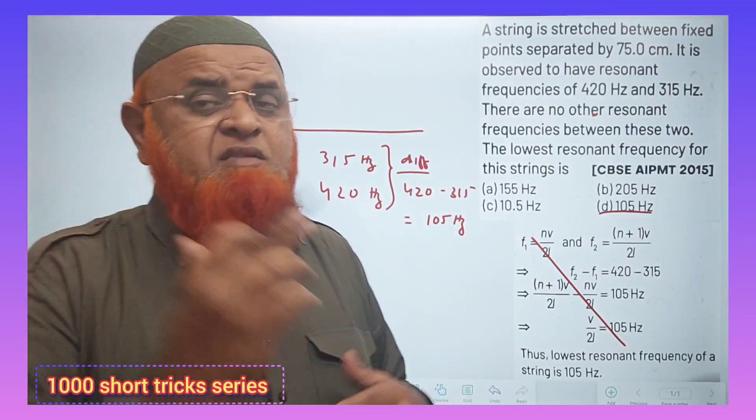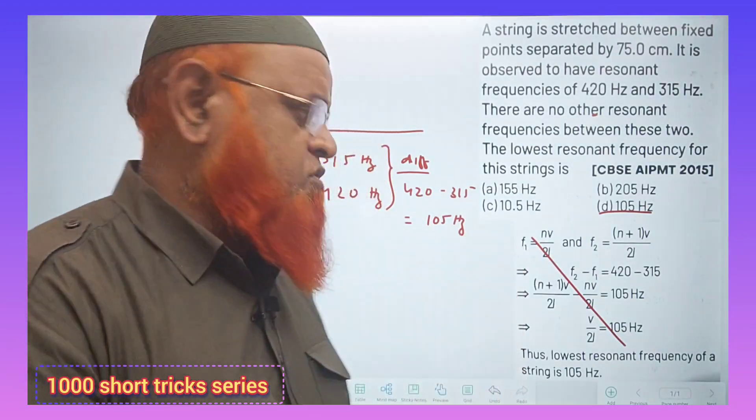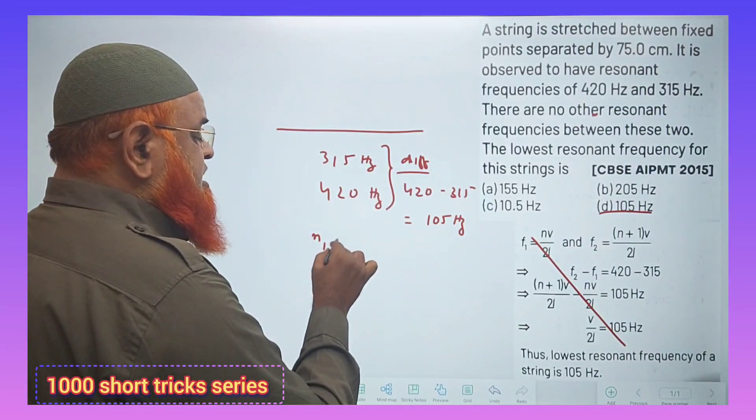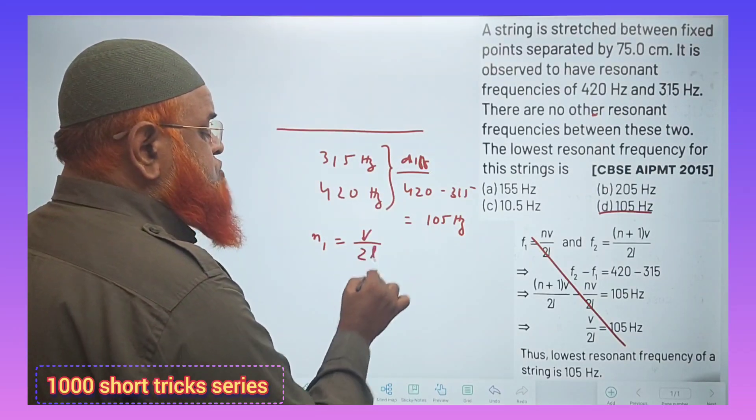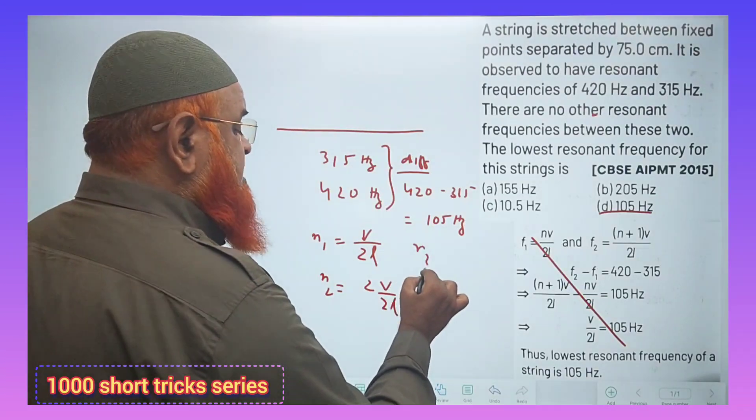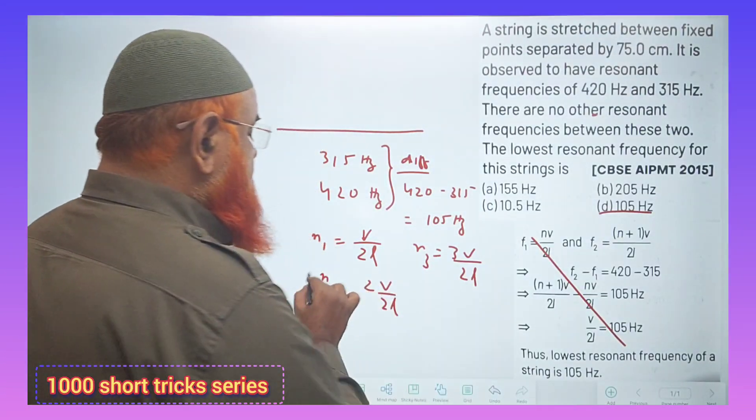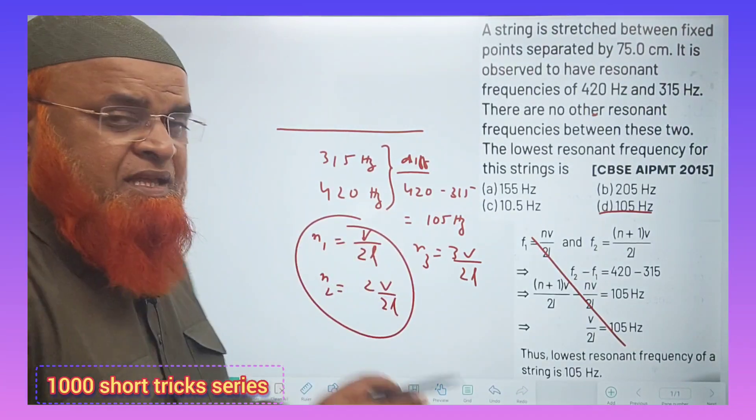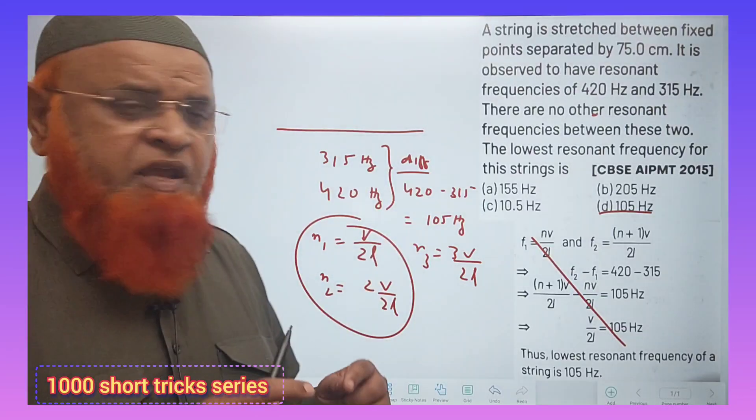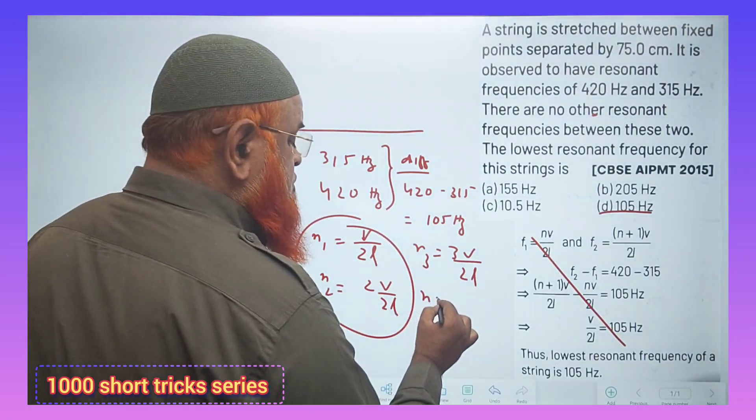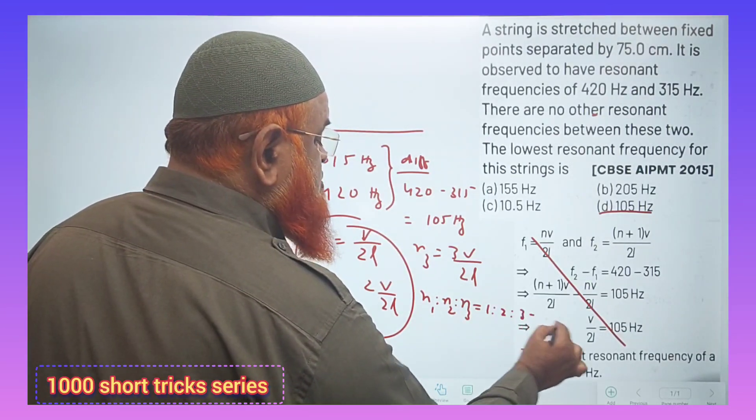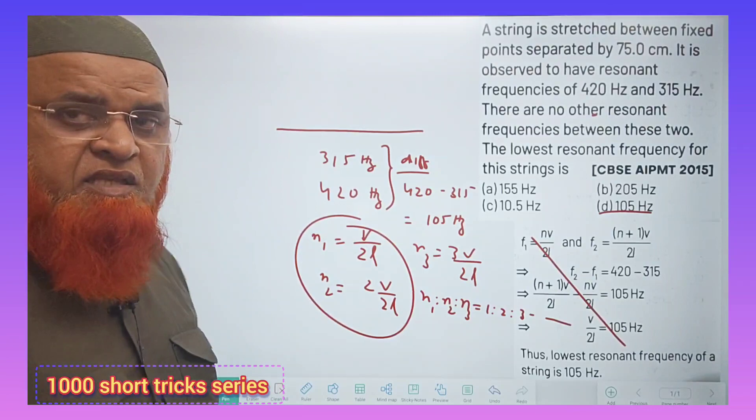Now, why do we have to do the difference? That is the question before us. You all know that fundamental frequency is V by 2L. Second one is 2V by 2L. Third one is 3V by 2L. If you see all these, the gap is going to be only 1. What is the ratio actually? So if you do N1 is to N2 is to N3, the ratio is 1 is to 2 is to 3 and so on.